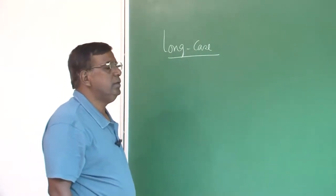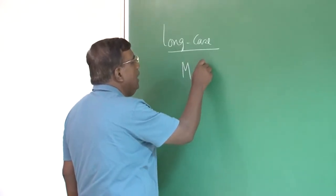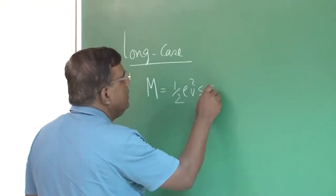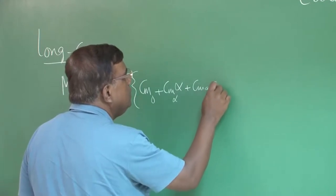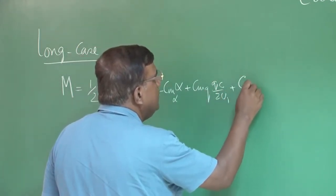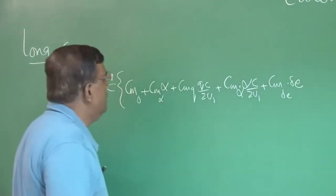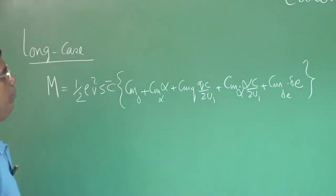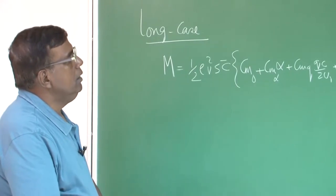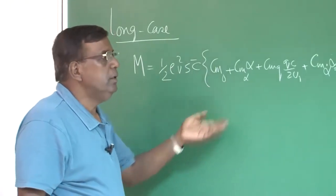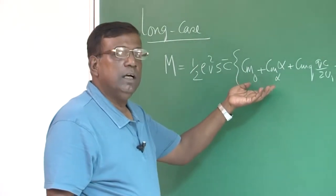But for high-performance aircraft, things are a little more complicated. For example, for the longitudinal case, when I model the pitching moment, I write it as: one-half rho v-squared S c-bar times (Cm0 + Cm_alpha times alpha + Cm_q times q*c-bar over 2u1 + Cm_delta_e times delta_e). But if the angle of attack is much higher, violating the small angle approximation, there are additional terms that have to be incorporated. Also, if the rates are very fast, we have to incorporate many terms dominated by unsteady effects.